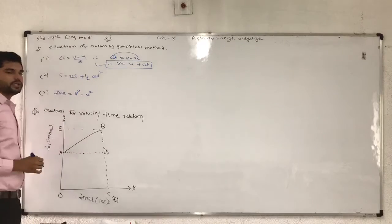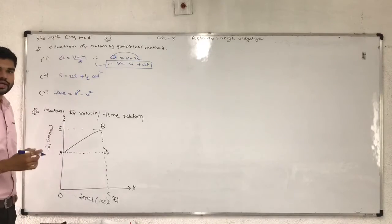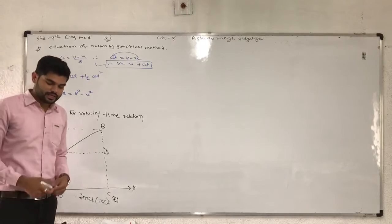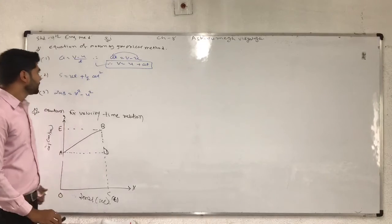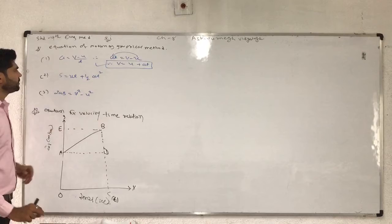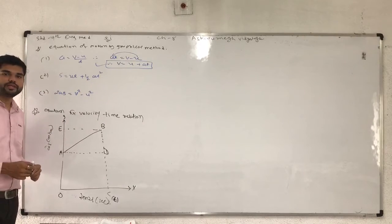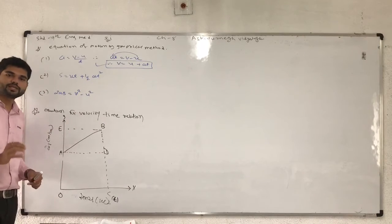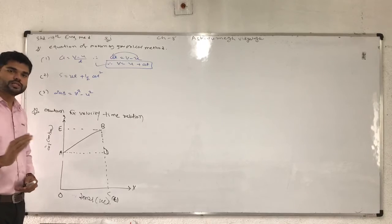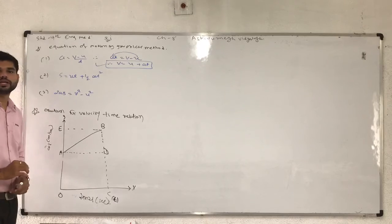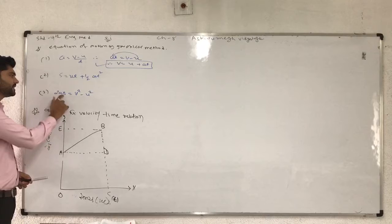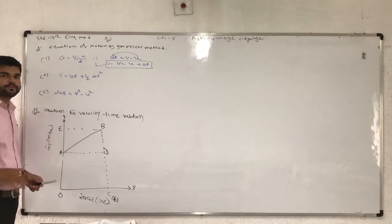Here V is equal to final velocity, U is equal to initial velocity, T is equal to time, A is equal to acceleration, and S represents displacement or distance covered by the object.